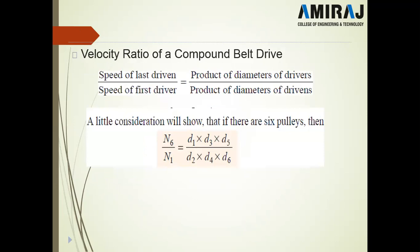For a compound belt drive used to efficiently cover large distances, the velocity ratio is the speed of the last driven divided by the speed of the first driver, equal to the product of driver diameters divided by the product of driven diameters. If there are six pulleys — three drivers and three driven — the speed ratio N6/N1 = (D1 × D3 × D5) / (D2 × D4 × D6).